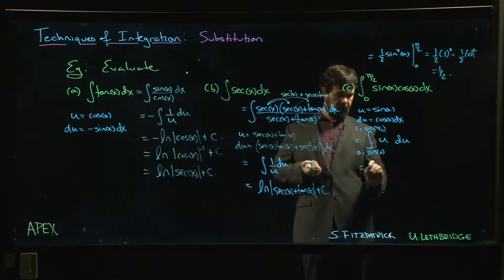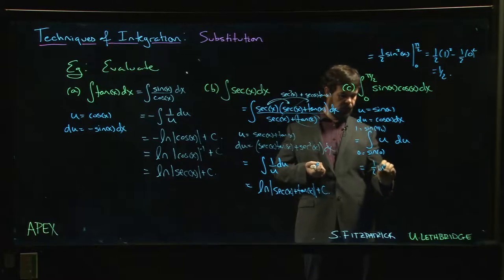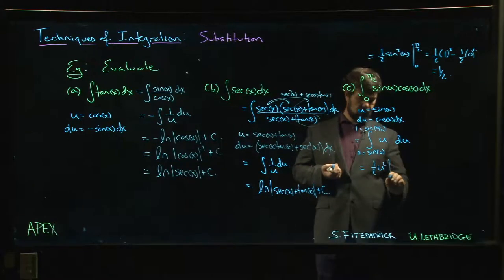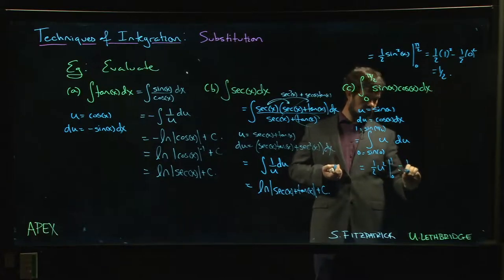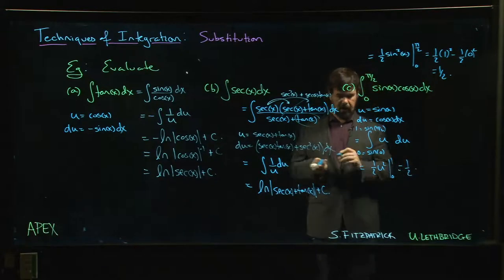So what we have is 1 half u squared from 0 to 1. And like before, we had 1 half.